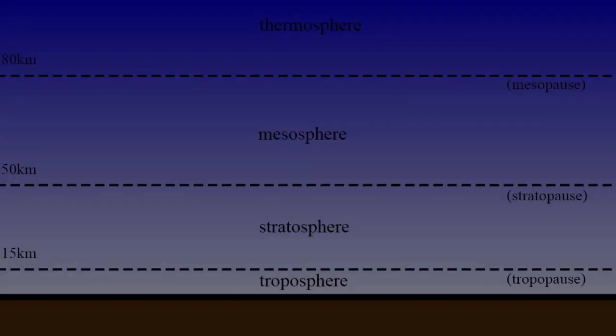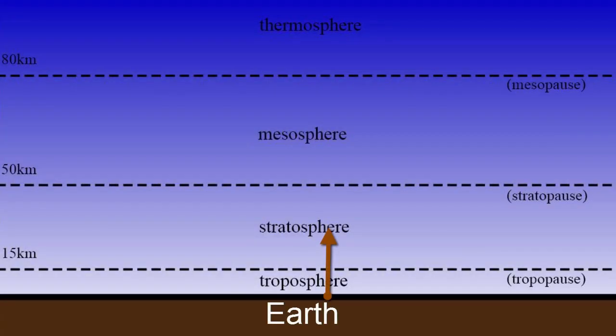If we look at a cross-section of the atmosphere, only 50 kilometers has enough air for humans to breathe. The pressure also decreases as we go higher. That's because as we go higher in the atmosphere, there are fewer air molecules.